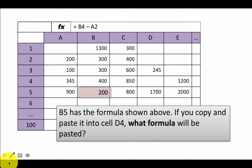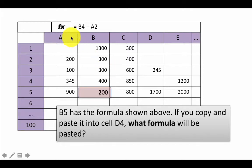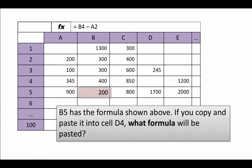So B5 is equals B4 minus A2. And if you copy and paste it into D4, what formula is going to be pasted? If you can answer this correctly, that means you really understand what is going on with relative addresses. So pause the video, and once you have an answer, continue. With respect to B5, what is B4? B4 is simply the cell one row above same column. Therefore, with respect to D4, one row above same column is going to be D3. So B4 will get translated into D3.